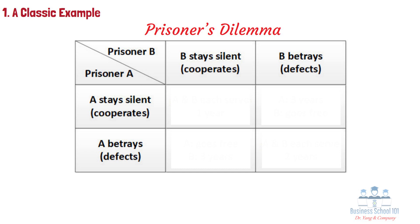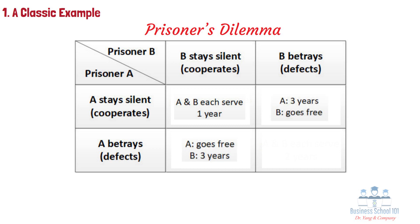If both Alice and Bob remain silent, they will each be sentenced to one year in jail. If one of them confesses and the other remains silent, the confessor will go free and the other will be sentenced to three years in jail. If both Alice and Bob confess, they will each be sentenced to two years in jail. The outcomes of the game are the sentences they will receive.